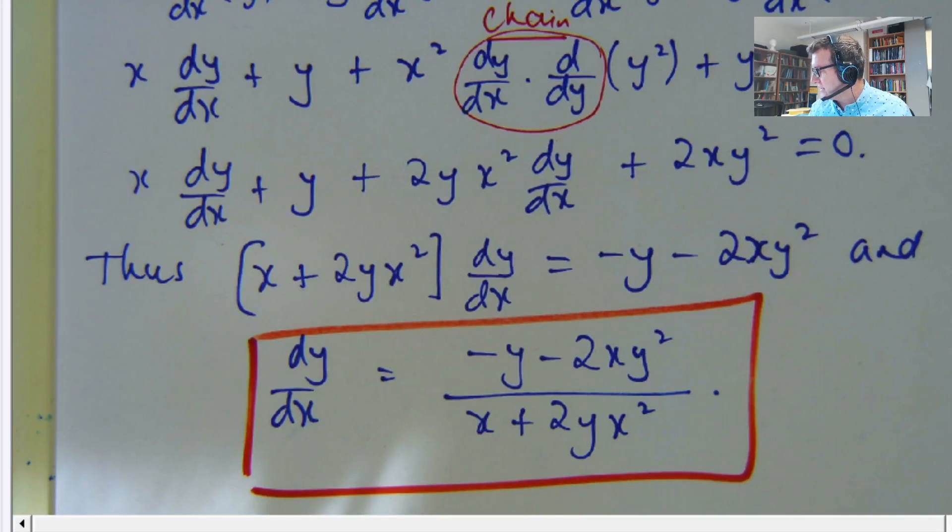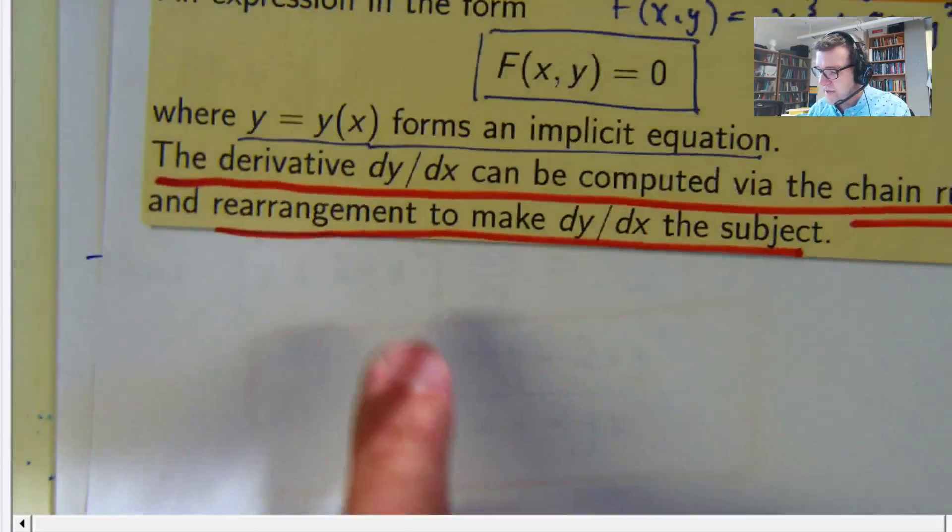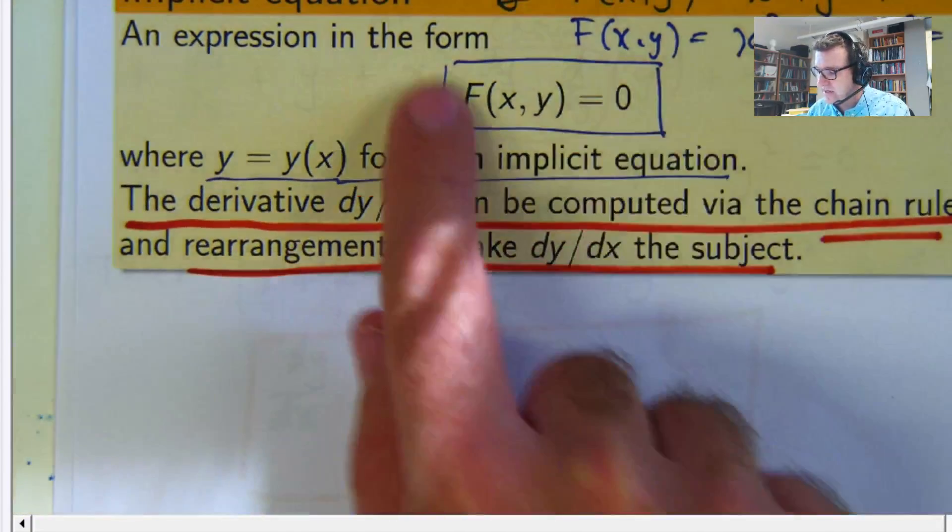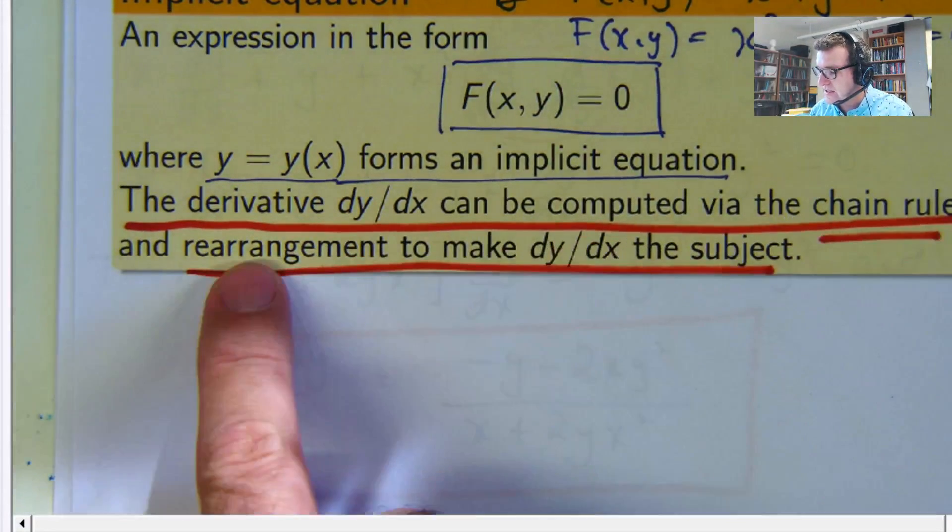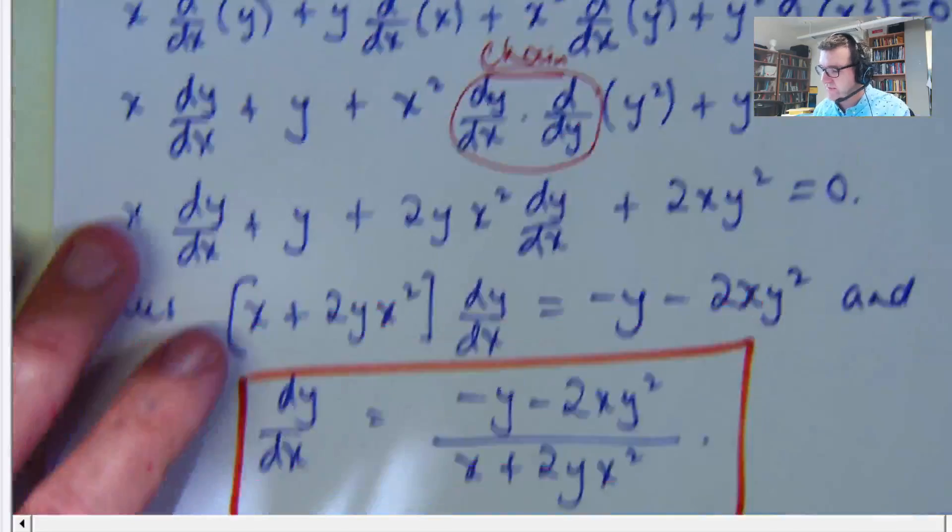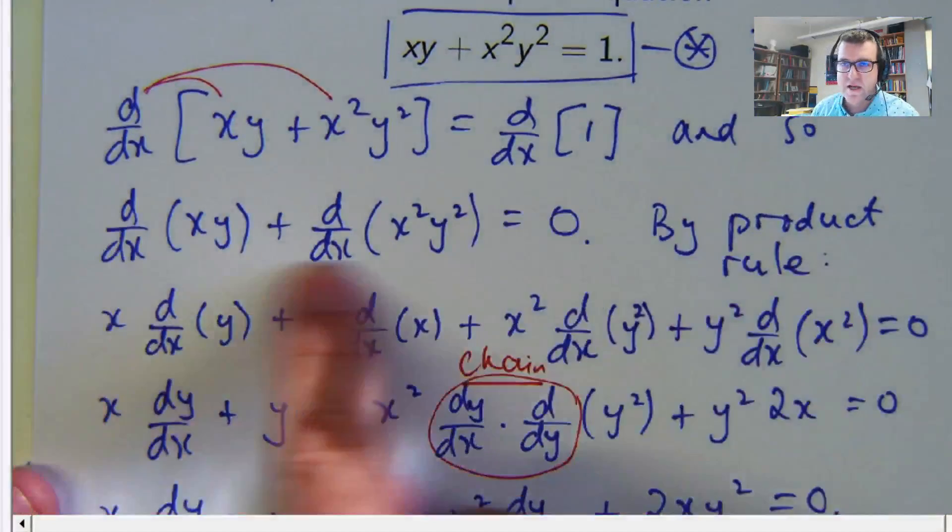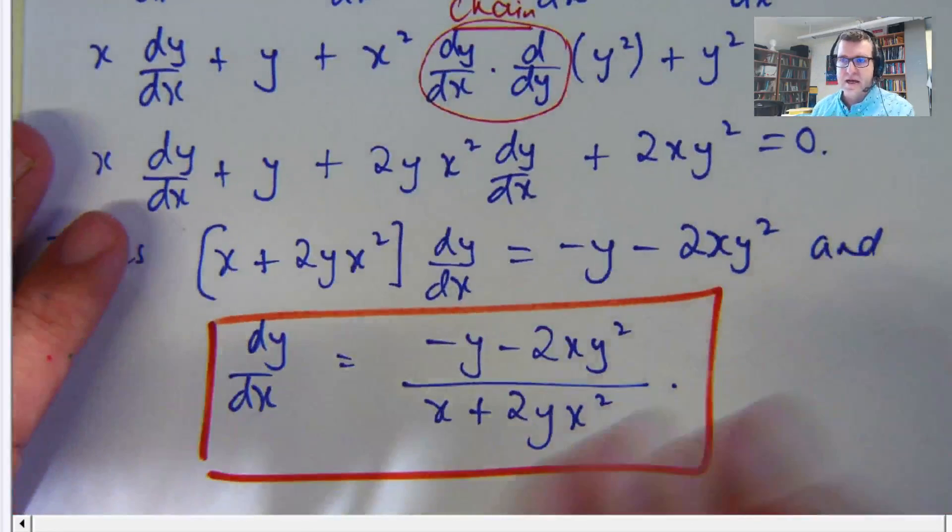And the method was exactly what we outlined here. We differentiated both sides. Well, there wasn't a zero here, but like I said, it doesn't matter. We computed the difficult derivatives by the chain rule. Well, before we did that, we used the product rule.